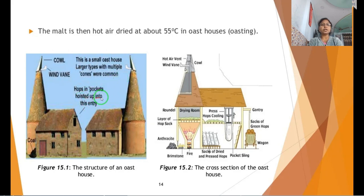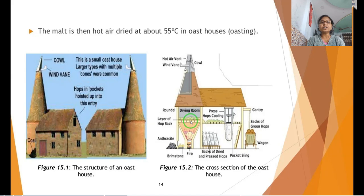Hops are added through the entry window of the oast house, then pressed and cooled, producing sacks of dried and pressed hops. The oast house maintains 55 degrees centigrade — coal is used to maintain the temperature inside. These are the drying rooms with layers of hop sacks.